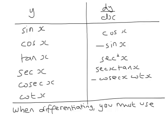And finally, if you differentiate cot x, you get minus cosec squared x.